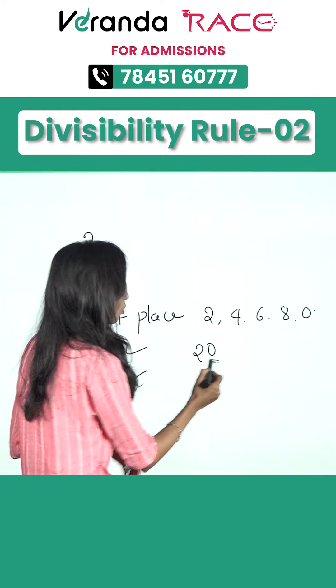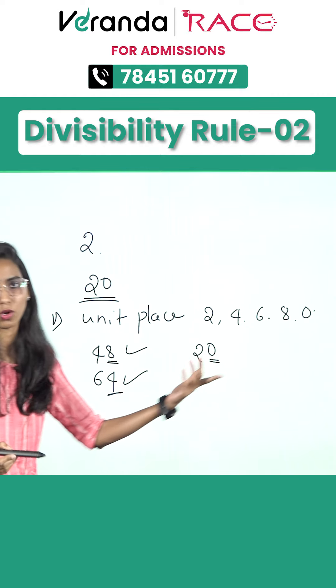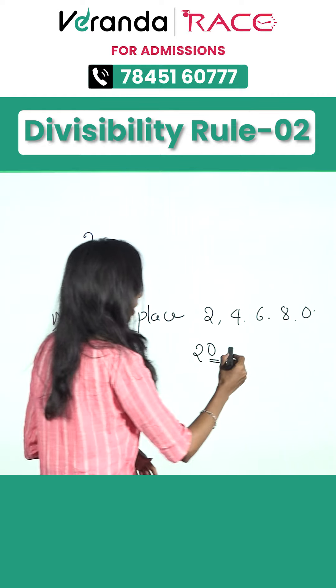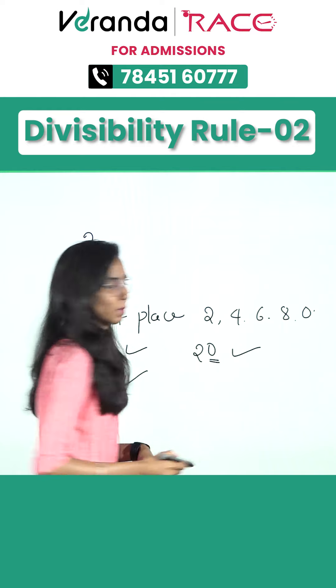And then 20 — in the unit place we have 0, so this number is also divisible by 2.